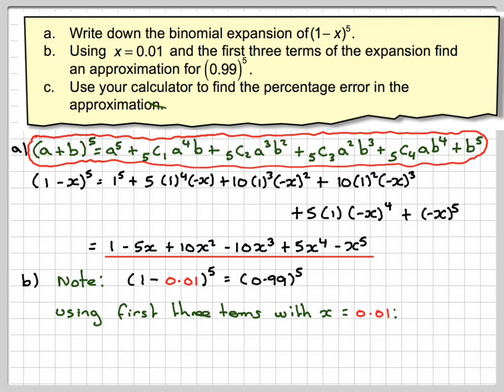We get 1 minus 0.01 to the power of 5 is 1 minus 5 times 0.01 plus 10 times 0.01 squared.